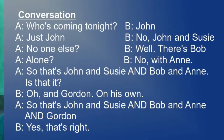A: Who's coming tonight? B: John? A: Just John? B: No. John and Susie? A: No one else? B: Well, there's Bob? A: Alone? B: No. With Anne? A: So, that's John and Susie? And Bob and Anne?